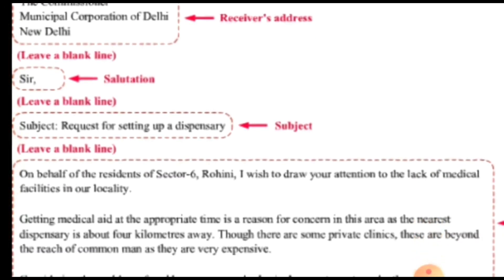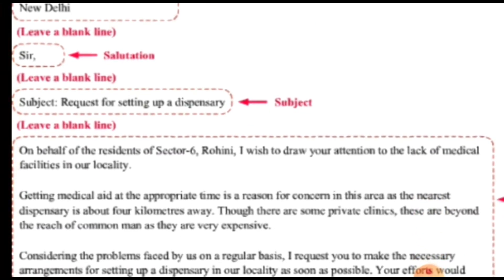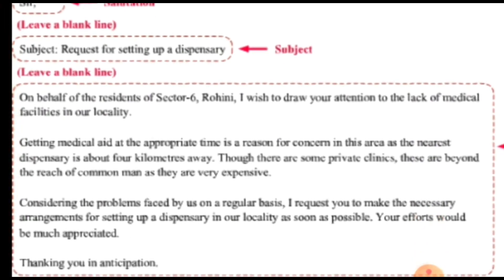This is the body part: 'On behalf of the residents of Sector 6, Rohini, I wish to draw your attention to the lack of medical facilities in our locality. Getting medical aid at the appropriate time is a reason for concern in this area, as the nearest dispensary is about four kilometers away. There are some private clinics, but these are beyond the reach of common man as they are very expensive.'